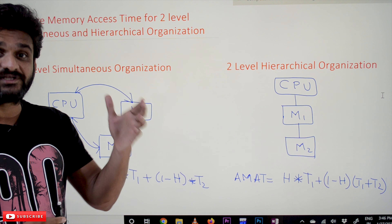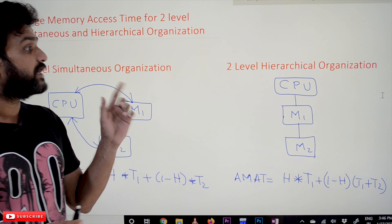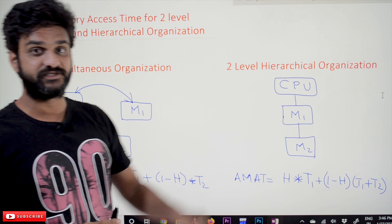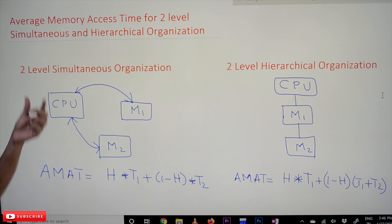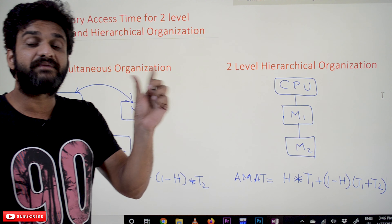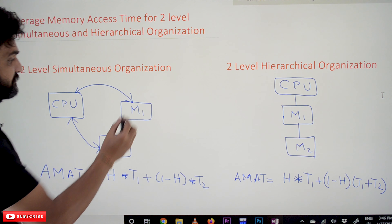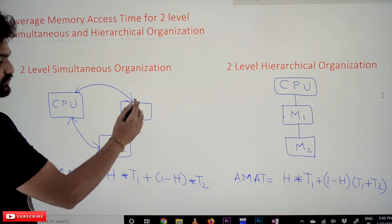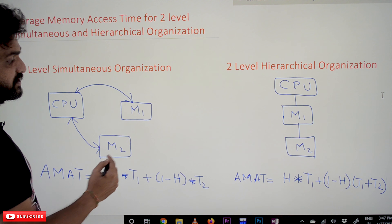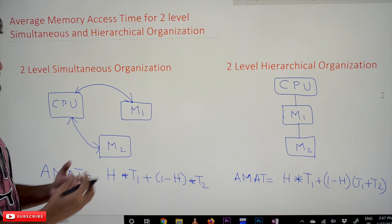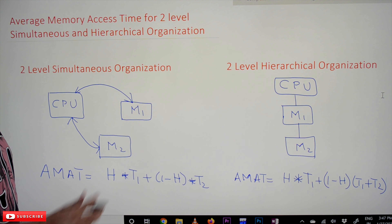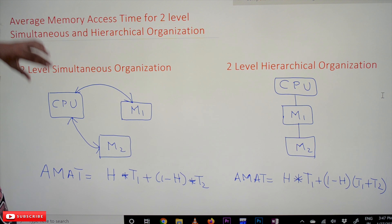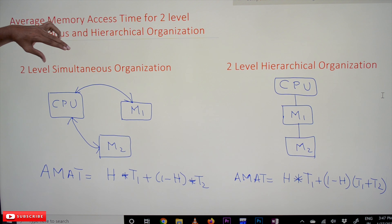This is what we call two-level simultaneous organization. Two-level means two memory components are used here: Memory 1 and Memory 2. In our assumption, we consider Memory 1 as cache memory and Memory 2 as the main memory.